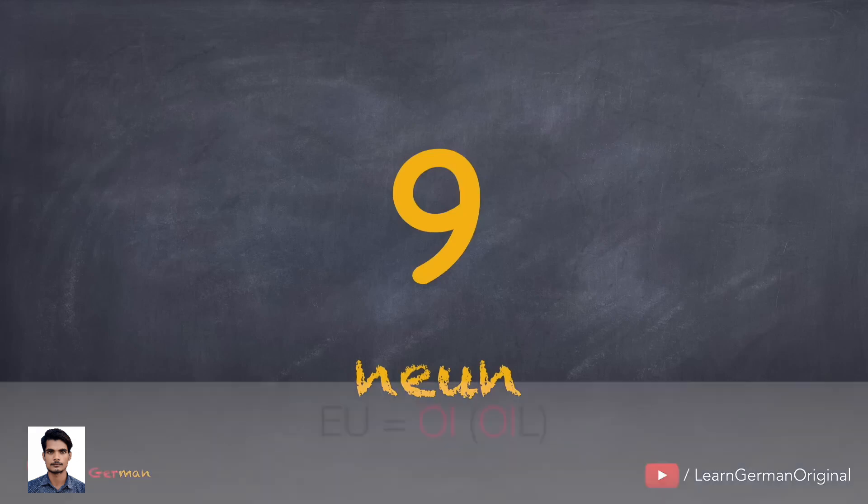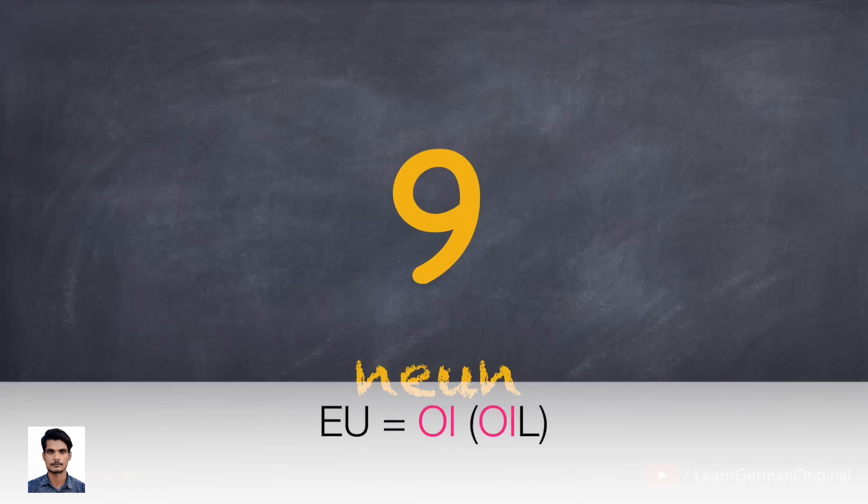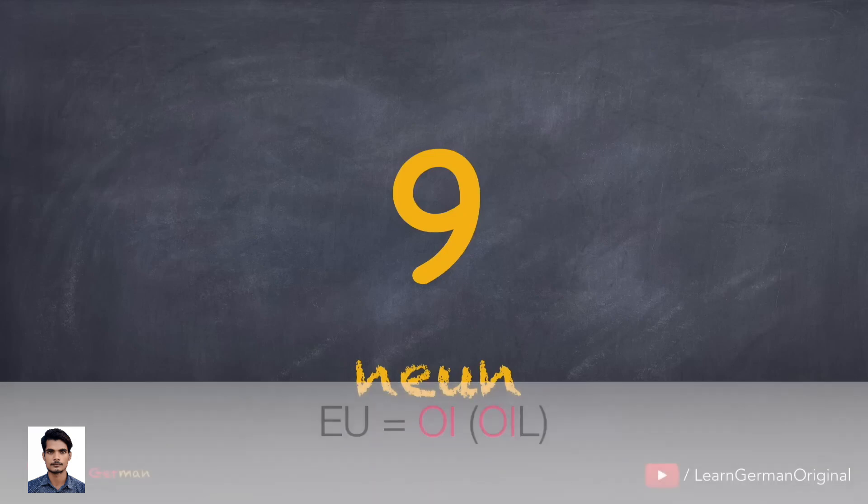Neun. In this case, EU is pronounced like OI, for example in 'oil' in English.